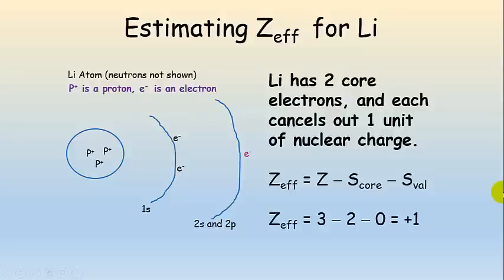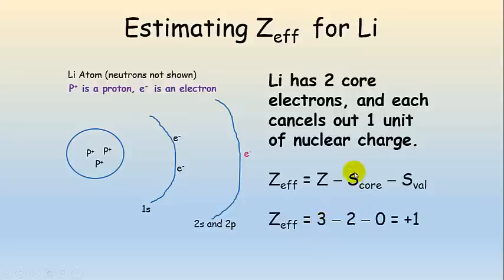Let's calculate Z effective for lithium. Lithium has three protons and three electrons: 1s2 and 2s1. The 2s electron is the one we're watching. It has two core electrons, so: Z_eff = 3 − 2(1) − 0(0.35) = +1. There are no other valence electrons, so the valence screening term is zero. The effective nuclear charge for lithium's valence electron is +1.